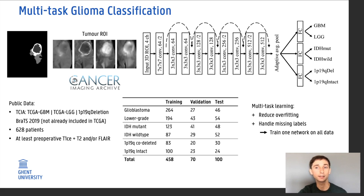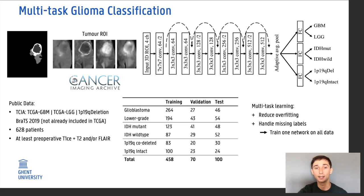The 1P19Q task is also only trained for low-grade glioma, as this marker is only considered for these patients in the WHO guidelines, and adding glioblastoma — all 1P19Q intact — would introduce a very large imbalance in the dataset.